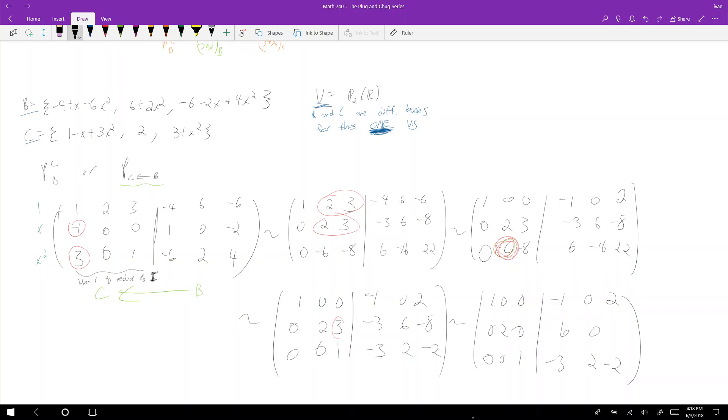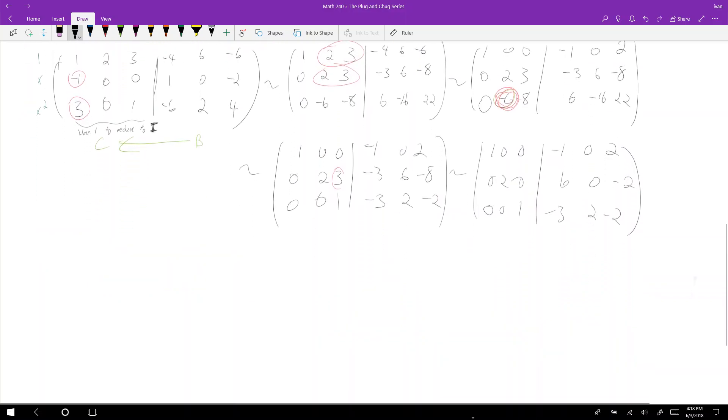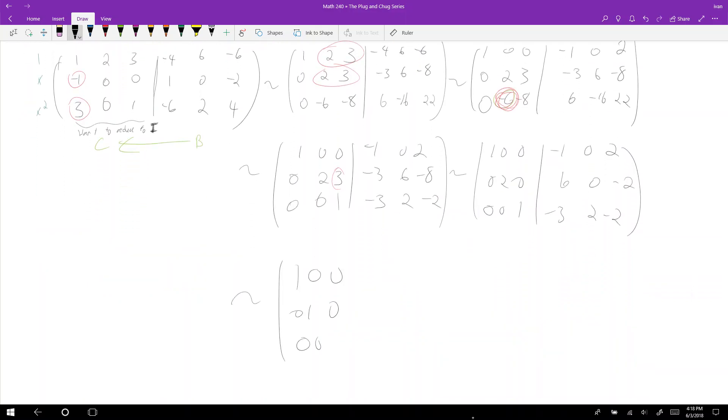And that times three minus the bottom, so that's going to be 6, 0, negative 2. And then finally divide that middle row by 2. I get 1, 0, 0, 0, 1, 0, 0, 0, 0, 0, 1, 1, negative 1, 0, 2, 3, 0, negative 1, negative 3, 2, negative 2. And here I have my identity matrix, and guess what's on the left, right-hand side?